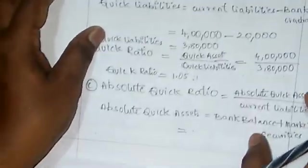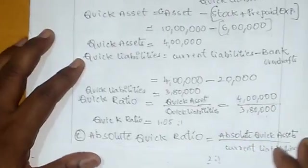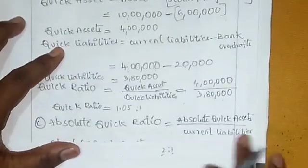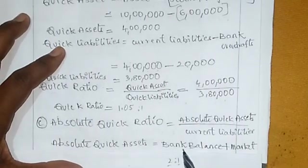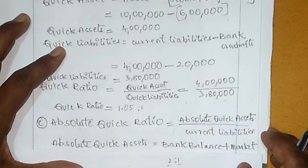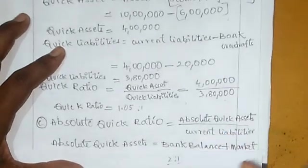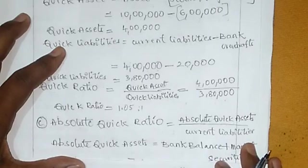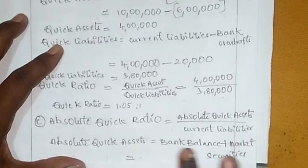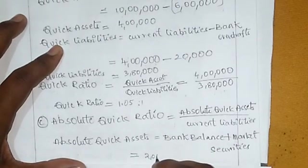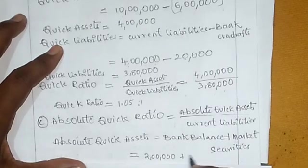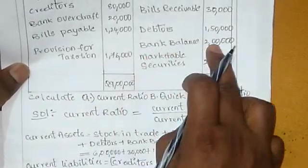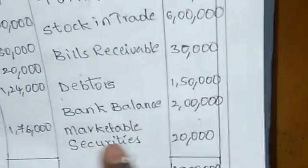Now let's calculate the absolute quick ratio. Absolute quick ratio = absolute quick assets / current liabilities. Absolute quick assets = bank balance + marketable securities. Bank balance is 2 lakhs and marketable securities is 20,000.